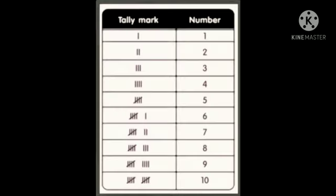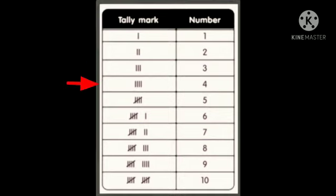Grouping the tally marks in fives makes it easier to total the number in each category by skip counting. A bundle of five is made by crossing it. Tally charts should always be given a title to inform the reader about the meaning of the data. For example: one mark equals 1, two marks equals 2, three equals 3, four equals 4, five is four marks with a cross, and so on up to ten.